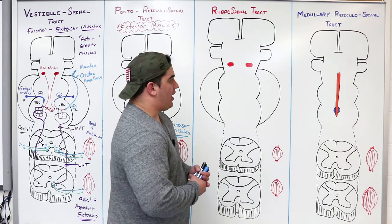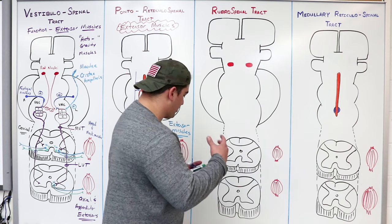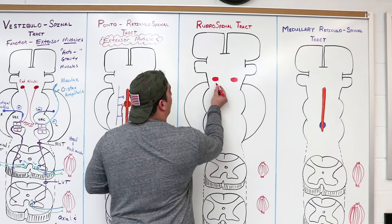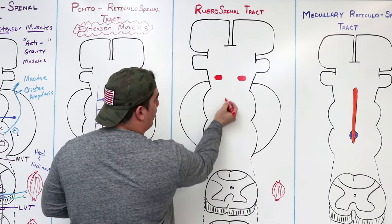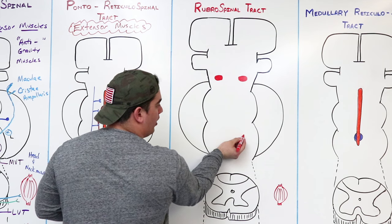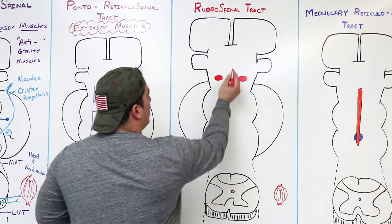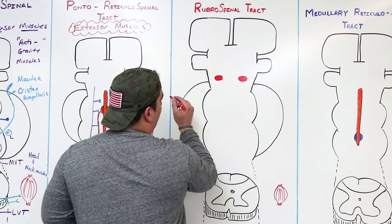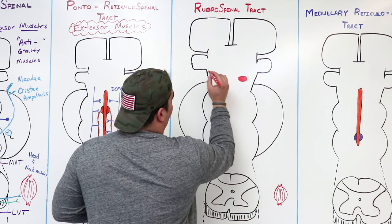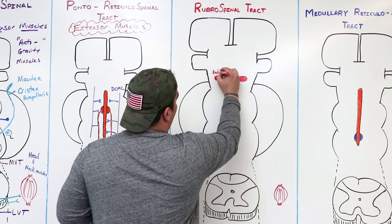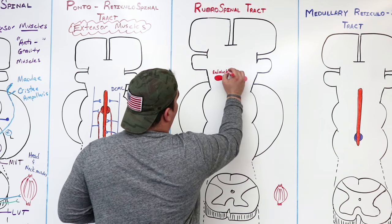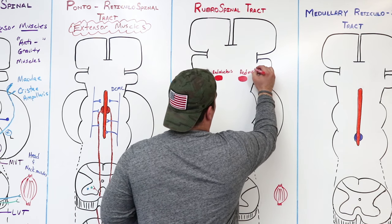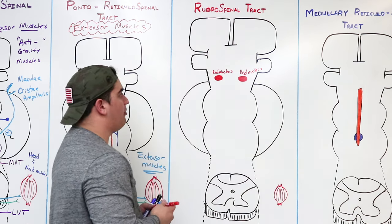So the rubrospinal tract starts where? It's kind of a tricky little system. It starts generally within the red nucleus. Here you have the midbrain, pons, medulla, and then the spinal cord sections, and here's your cerebral cortex and cerebellum. In the midbrain you have these special nuclei called the red nuclei — this is your red nucleus. They're located within the midbrain.